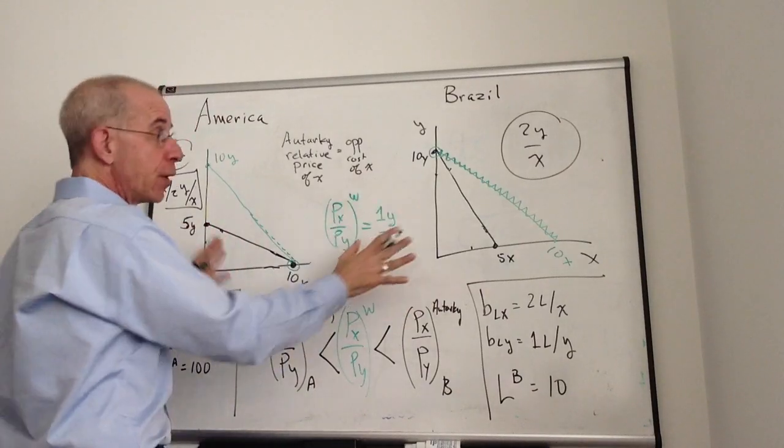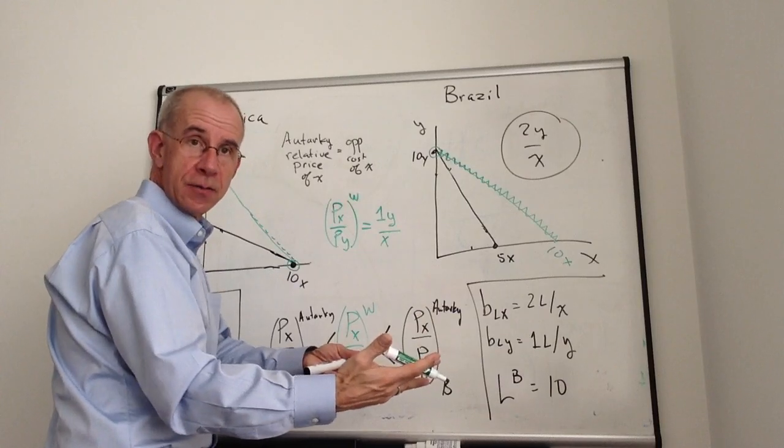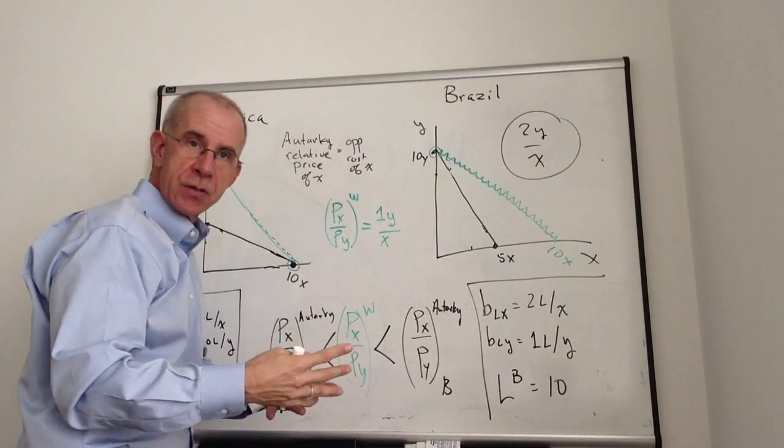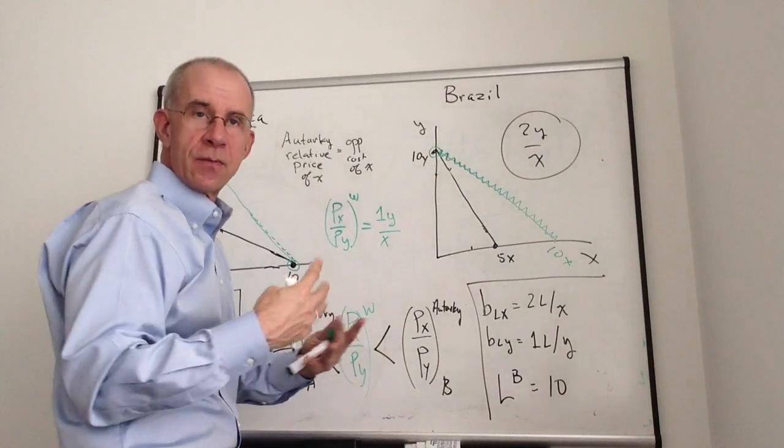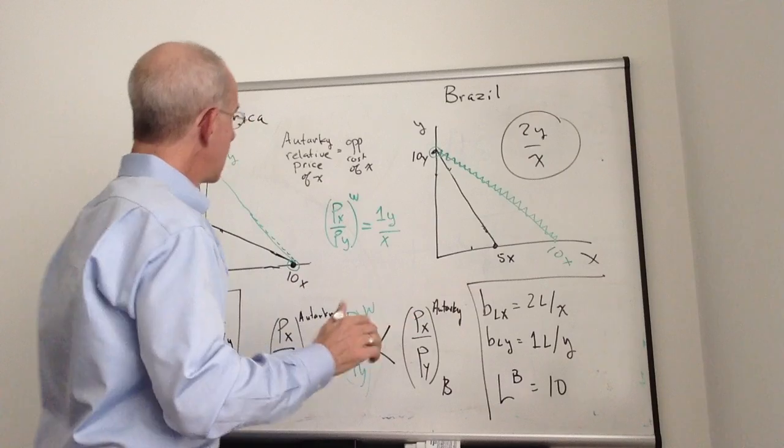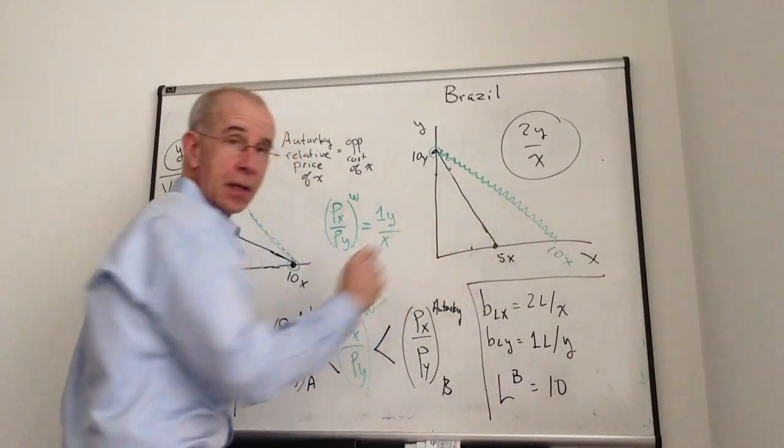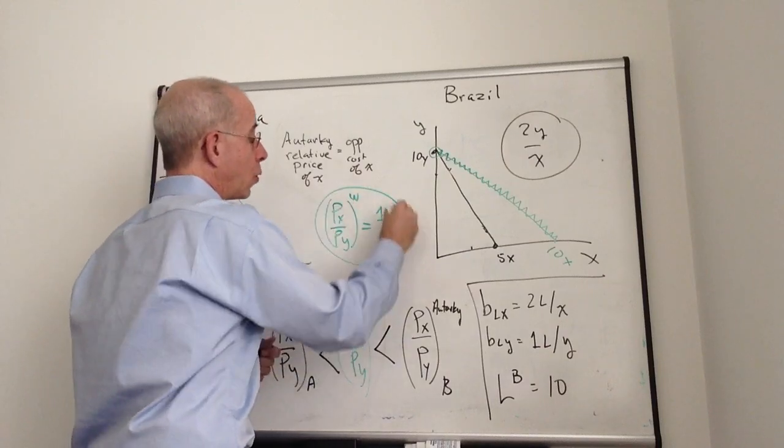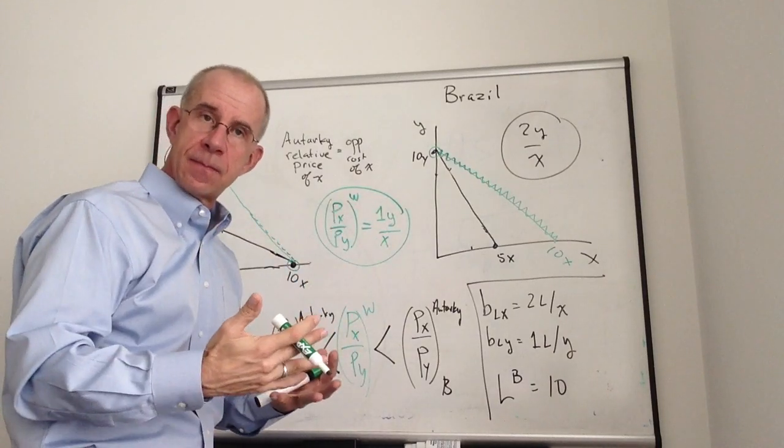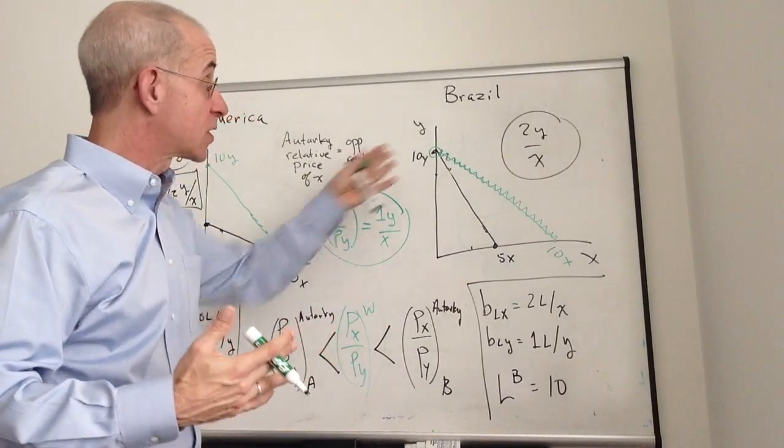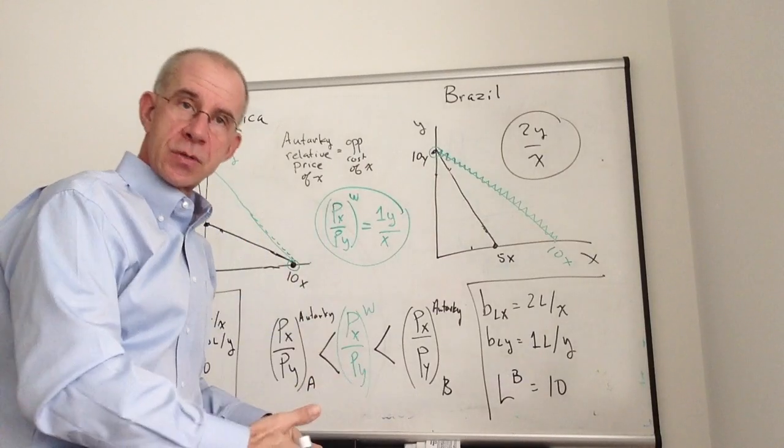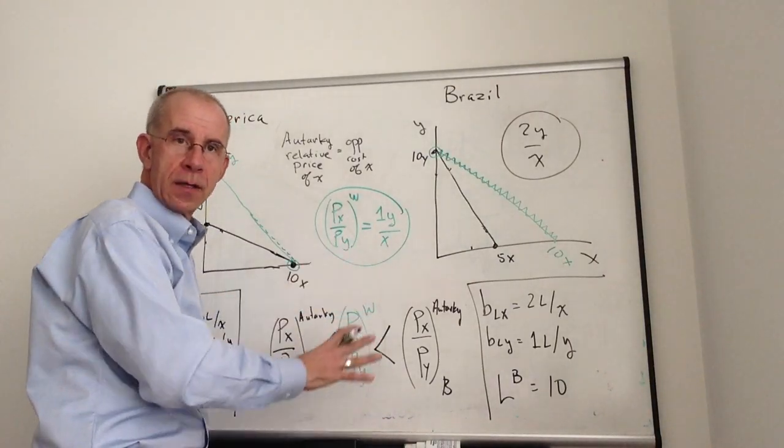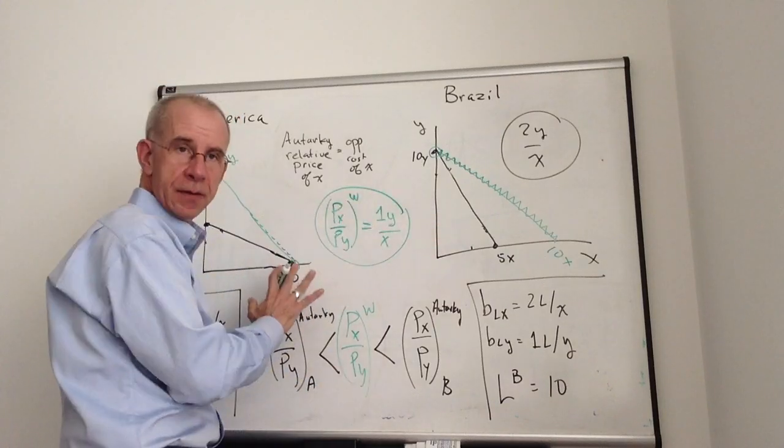One thing you should note: for both countries, if they focus on the good of comparative advantage, Y for Brazil, X for America, both countries are going to be able to consume combinations of Y and X that was impossible in autarky. This green line and that green line have the same slope. That is another way of saying that they're both reacting to the same set of world prices, the world prices given by the slope of this green line. Both countries can consume beyond their PPF, their production possibility frontier, if they trade according to comparative advantage.